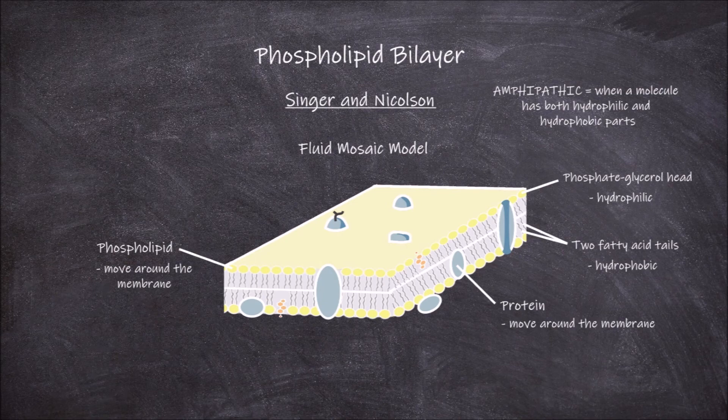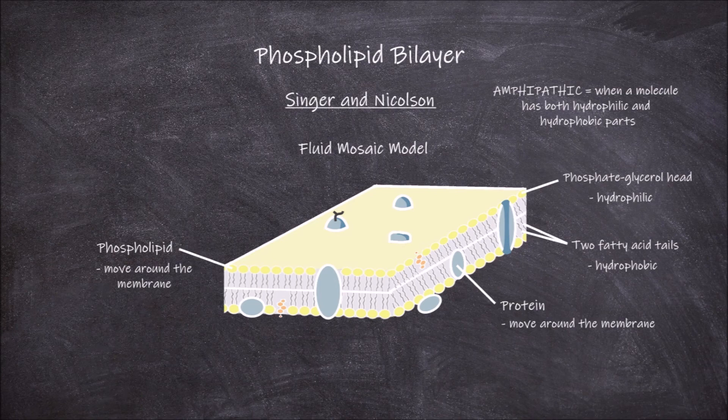Because they are amphipathic, phospholipids form bilayers when in water. There is water both inside and outside of the cell, so the hydrophobic tails arrange themselves facing away from the water by facing against another set of tails of another phospholipid. This creates a non-polar internal region of the bilayer, whilst the heads arrange facing the water, creating a phospholipid bilayer where all the hydrophobic tails are facing inwards, protected by the hydrophilic heads.